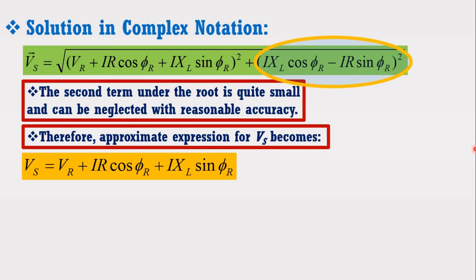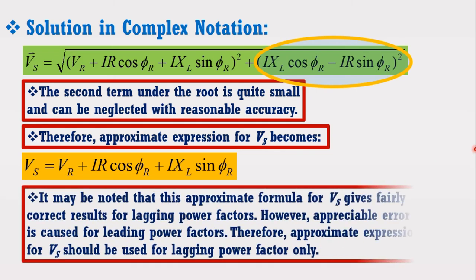It may be noted that this approximate formula for Vs gives fairly correct results for lagging power factors. However, appreciable error is caused for leading power factors. Therefore, approximate expression for Vs should be used for lagging power factor only.